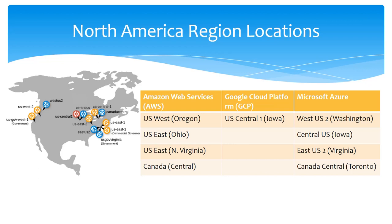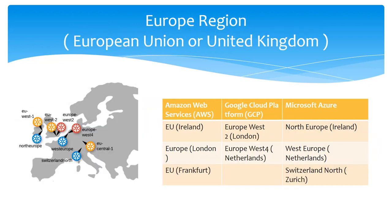These are the locations supported by respective cloud platforms in the North America region. Let's move ahead with the European region. The European region is categorized into two main sub-regions: European Union and United Kingdom. AWS supports European Union in Ireland, United Kingdom in London, and European Union in Frankfurt.